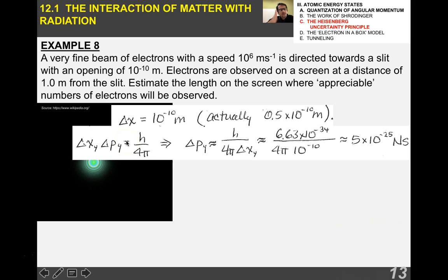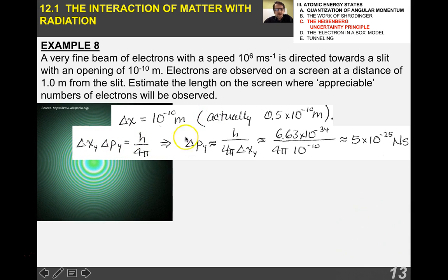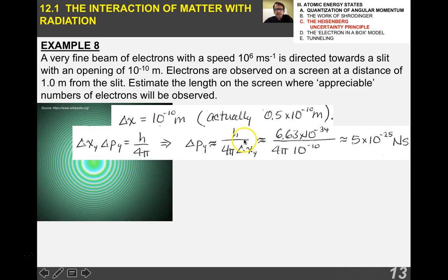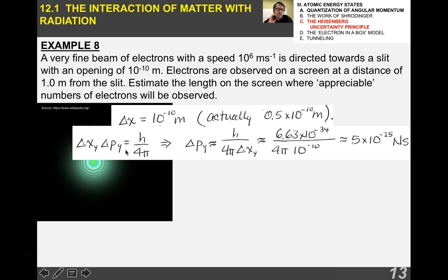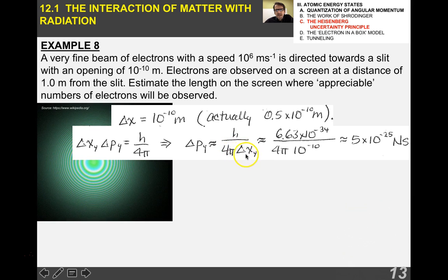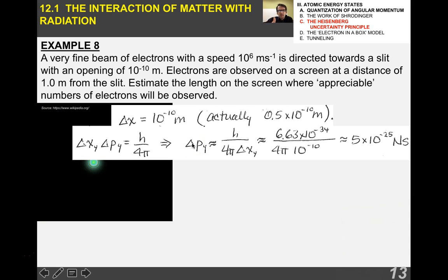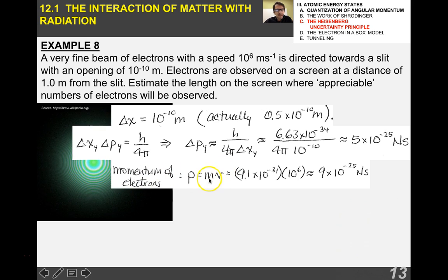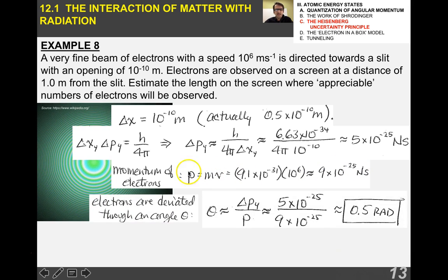Just considering the vertical and the Y direction, we have delta X sub Y times delta P sub Y equals H over 4 pi. That's Heisenberg's uncertainty principle. I'm going to solve this using approximately equal signs. Delta P sub Y equals H over 4 pi delta X sub Y. I put in my values, and I get that the change in momentum, the uncertainty in momentum in the vertical is 5 times 10 to the minus 25 newton seconds. The momentum of the electrons, P equals MV, I get 9 times 10 to the minus 25.